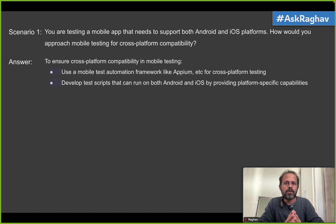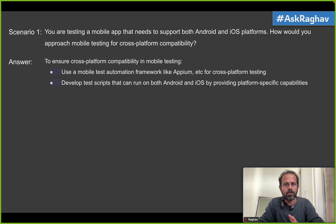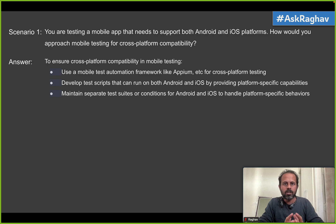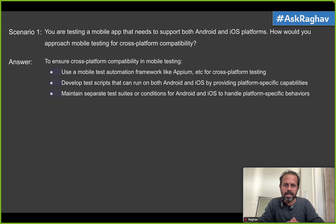When you create your scripts for testing, make sure they work on both Android and iOS. This can be tool-specific and platform-specific. Some platforms have separate keywords that can work for both operating systems. Based on the tool and framework you are using, create scripts that work on both Android and iOS. Another common way of handling this situation is to maintain separate test suites or separate collections, so that whenever you have to test on Android or iOS, you can run that particular test suite.